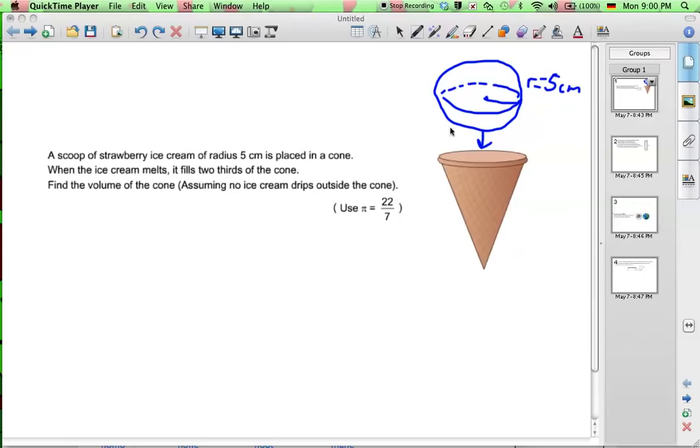So basically we have a scoop of ice cream, which is a sphere, and this melts into this cone, and it fills the cone up to two-thirds. It fills two-thirds of the cone.